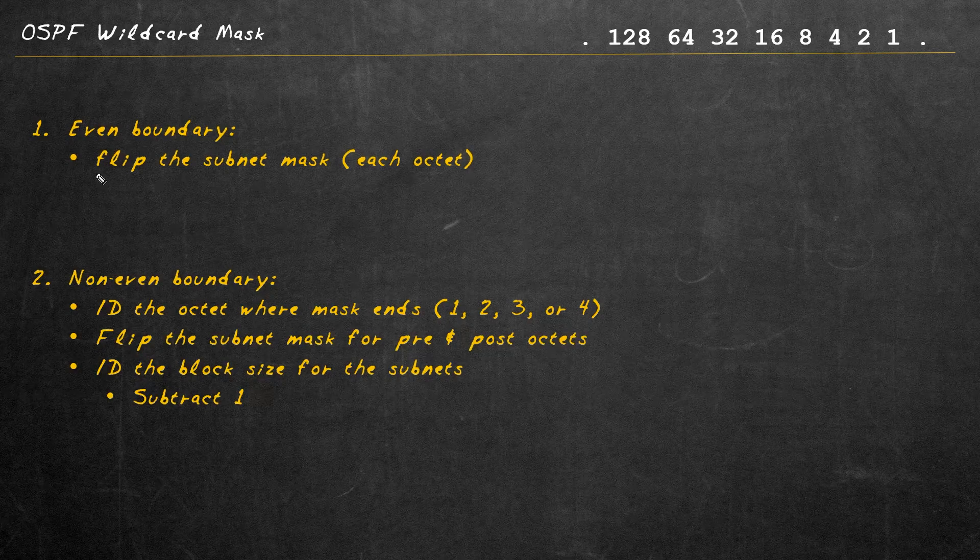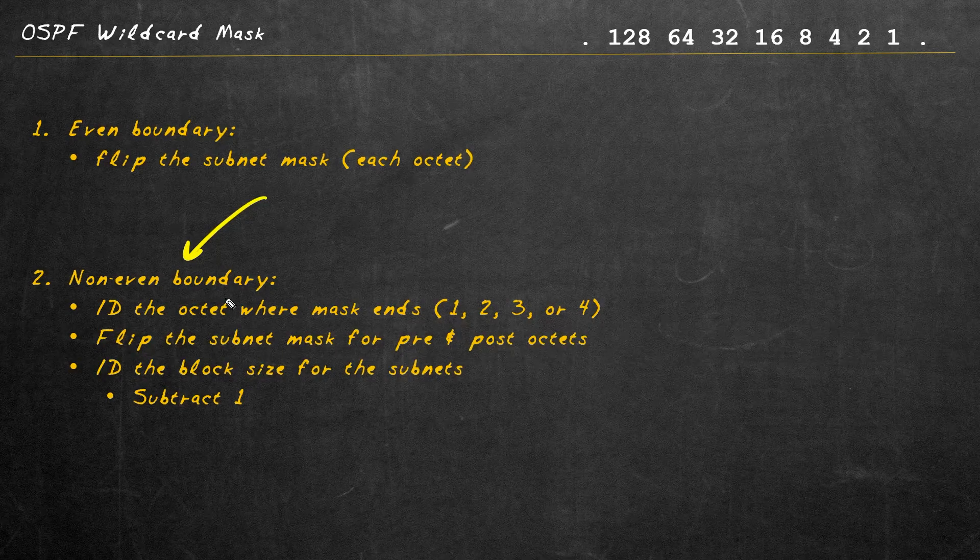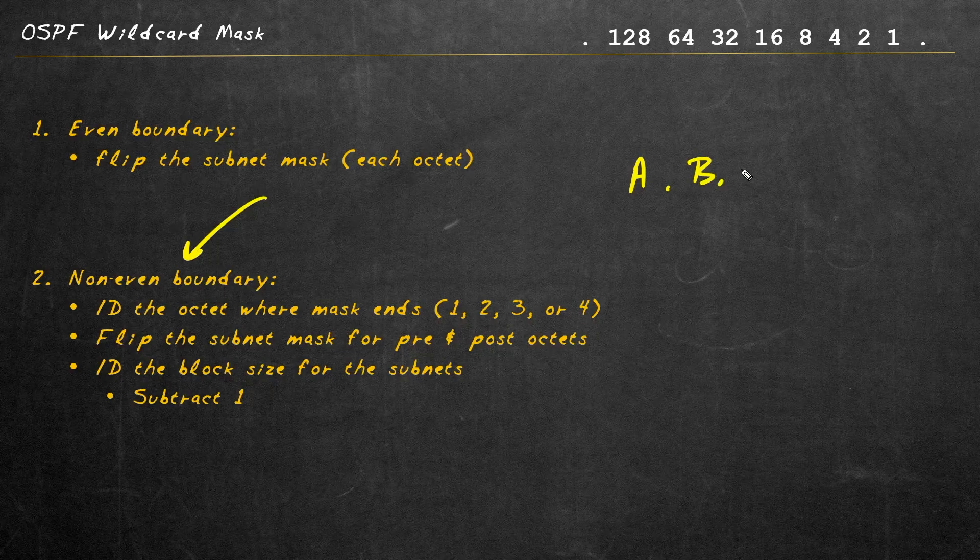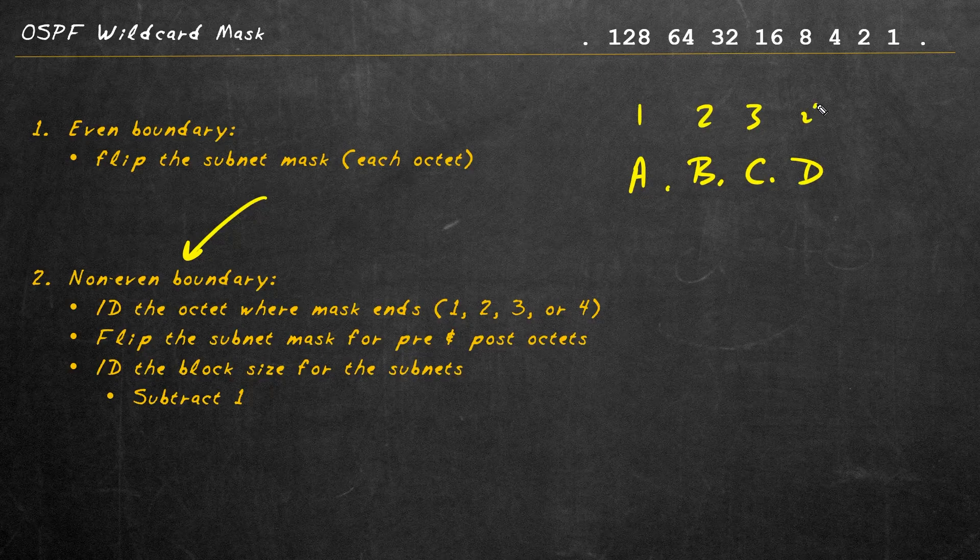Now, in contrast to just inverting the existing subnet mask, if we have a network where the actual network portion ends in the middle of an existing octet, here we have the first octet, the second octet, the third octet, and the fourth octet. I'll go and label them here: one, two, three, and four.